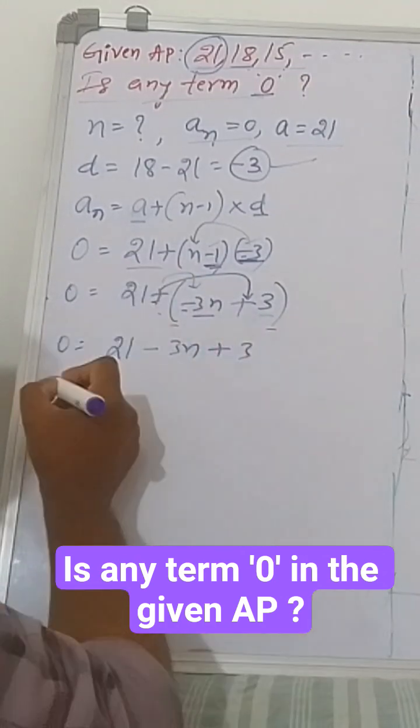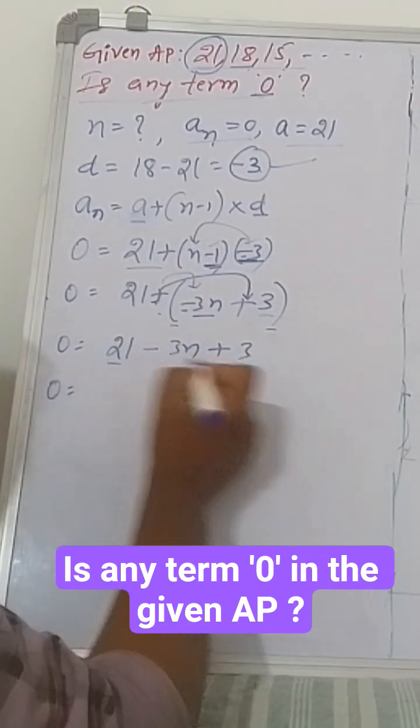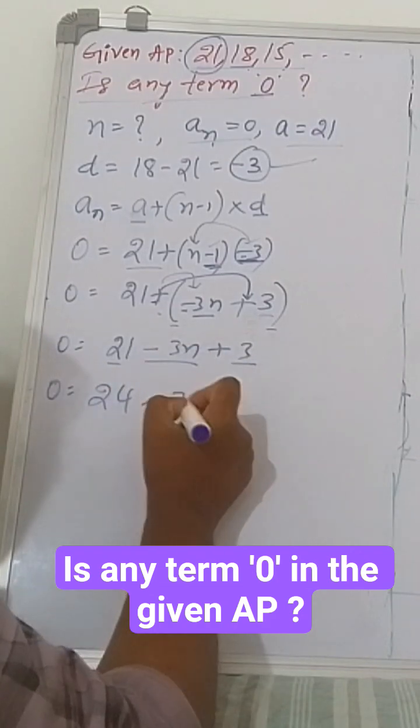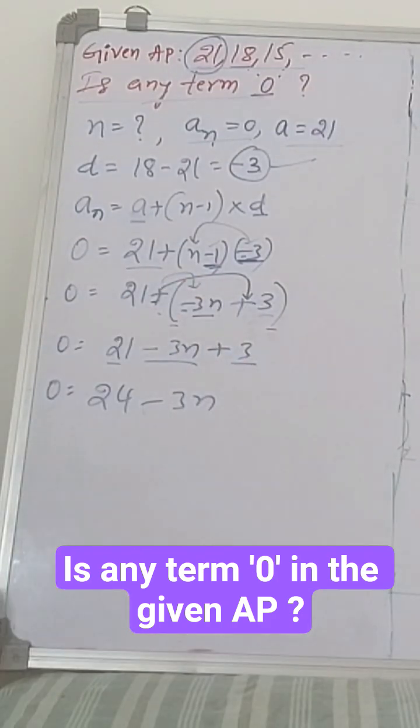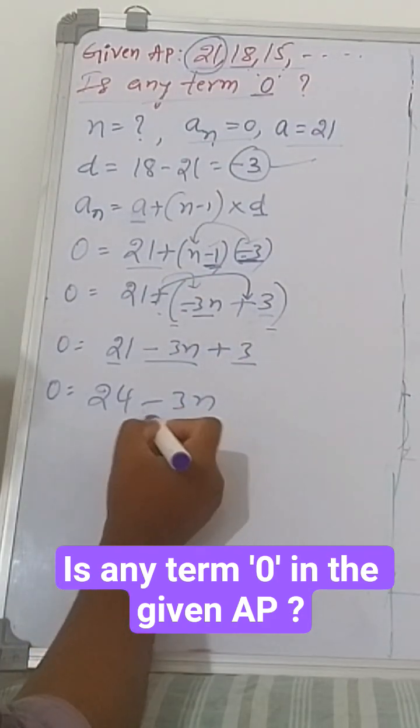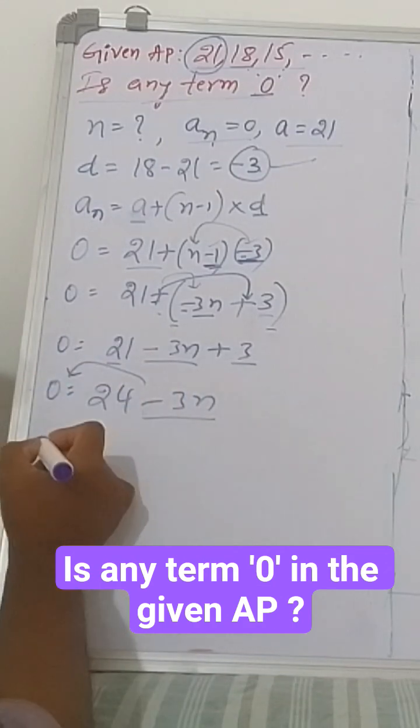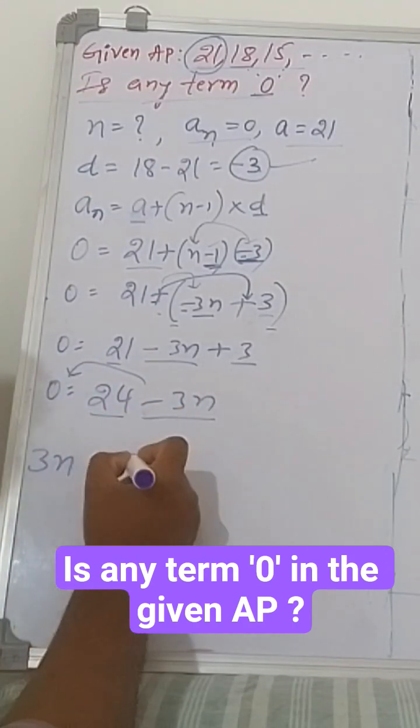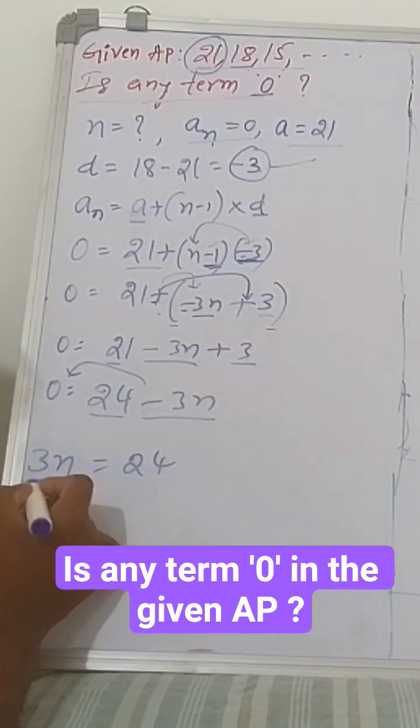So 0 equals 21 plus 3, which is 24, minus 3n. Now send minus 3n to this side, it becomes plus 3n. This 24 will be as is. We need n, we don't want 3, so divide both sides by 3.